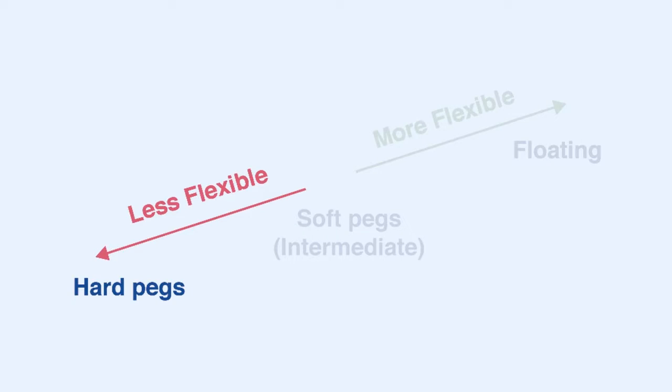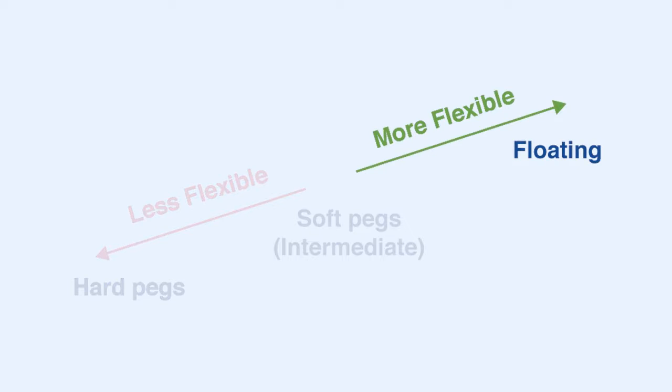The spectrum, or degree of exchange rate rigidity, is determined by the extent the government intervenes to affect the exchange rate. Hard pegs imply no flexibility of the exchange rate, while floating regimes imply free movement of the currency's price relative to other currencies.